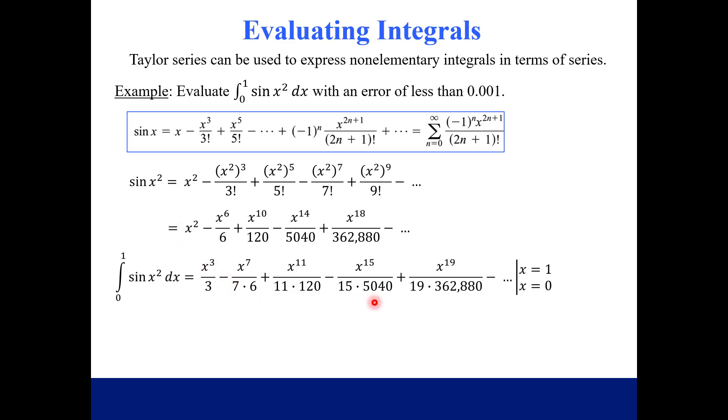Now, the next part is just to evaluate this as x goes from 0 to 1. Plug in 1, and then subtract plugging in 0. Every term has an x in it, so when we plug in 0, that's just going to all be 0. We are just going to have 1 in our numerators, because 1 to any power stays as 1. That is our expanded version of our integral, but the question had more detail. Figure out what this integral value is within a certain error amount.